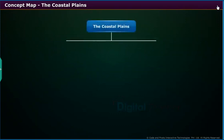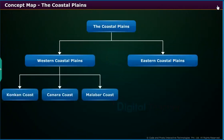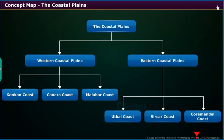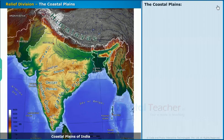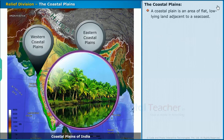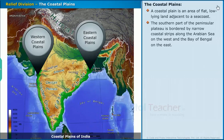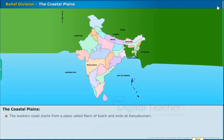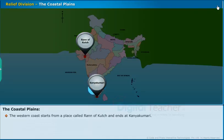Let us now look at the concept map of the coastal plains and learn about them. A coastal plain is an area of flat, low-lying land adjacent to a sea coast. The southern part of the peninsula plateau is bordered by narrow coastal strips along the Arabian Sea on the west and the Bay of Bengal on the east. The western coast starts from the Rann of Kutch and ends at Kanyakumari. The western coast is more narrow than the eastern coast.